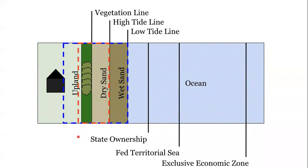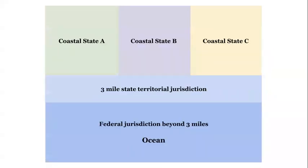Beyond the differences in the definitions of Coastal Zone adopted by each coastal state, there are also differences in the approaches coastal states take in the management of their defined Coastal Resources. We can see this if we look at an image showing three different Coastal States — Coastal State A, B, and C — that are next to each other with a three-mile state territorial jurisdiction as we move into the water, and then federal jurisdiction beyond three miles.